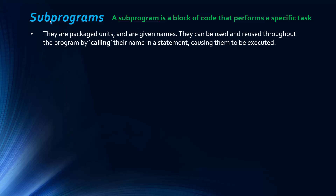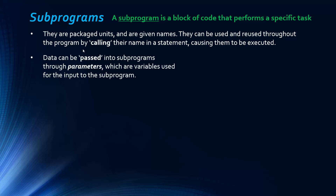Subprograms are given names and they can be used and reused throughout the program by calling their name in a statement, which causes them to be executed. Data can be passed into the subroutine — the input to the subroutine — through something called parameters, which are like a special kind of variable used for the input to the subprogram.